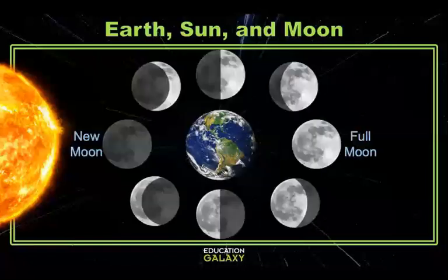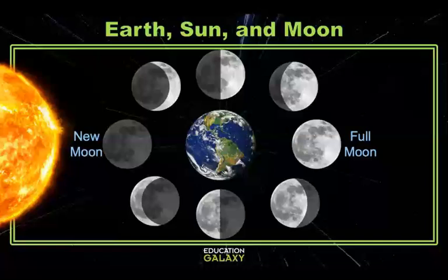When we see all of the Moon, we call it a full Moon. If we only see half of the Moon, we call it a crescent or a gibbous. And if we can't see any of the Moon, we call it a new Moon.